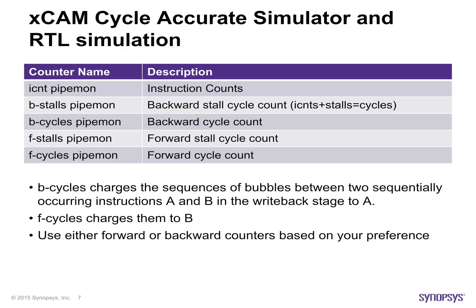Stalls are simply the difference between cycle counts and instruction counts. There is an option to choose either forward or backward cycle counts. In the case of forward cycles, the stalls between the two instructions are reported as coming from the second instruction, whereas with backward cycles, the stalls are reported as coming from the first instruction. In general, over an entire application run, the total number of B cycles and F cycles should be the same.